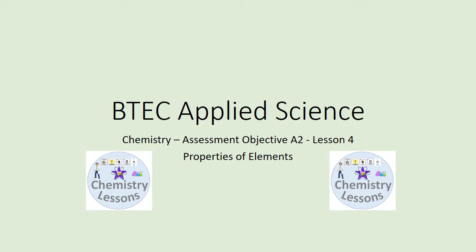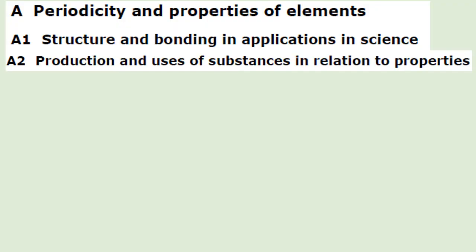If that doesn't make much sense to you, I suggest that whilst you're revising and working, you do have the specification in front of you. So this is unit one, which is a first year unit. There are three assessment objectives — A, B and C for chemistry, biology and physics. And for chemistry there are two objectives: A1 and A2. This is lesson four from the second assessment objective, A2.